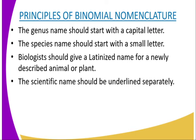Any biological name should be Latinized. There are several reasons why biological names should be Latinized. A biologist should give a Latinized name for a newly described animal or plant species where the Latin name is missing. For example, if you identify a plant anywhere in the country, you can include the suffix -ensis at the end of the word so that it becomes Latinized. The last rule is that the scientific name should be underlined separately — that is, the genus name and the species name should each be underlined separately when written by hand. But when printed, they can be written in italics.